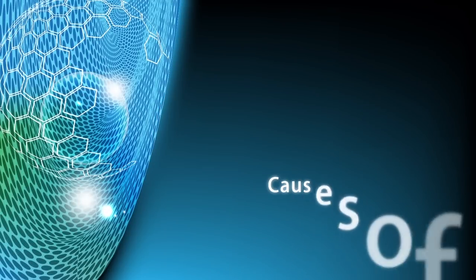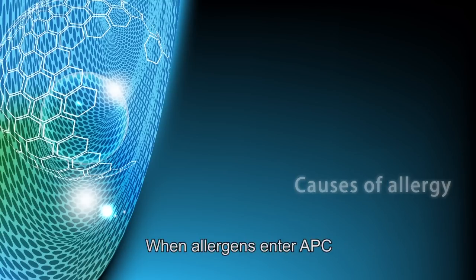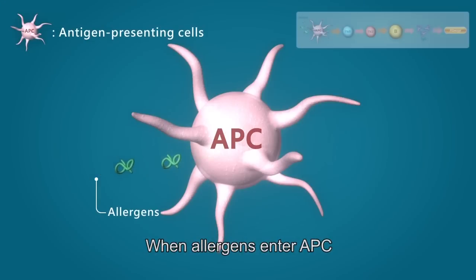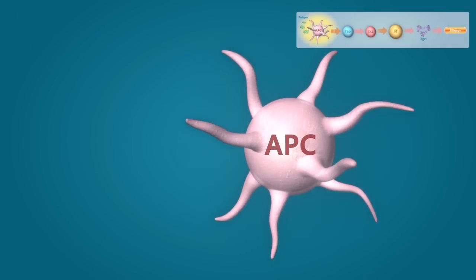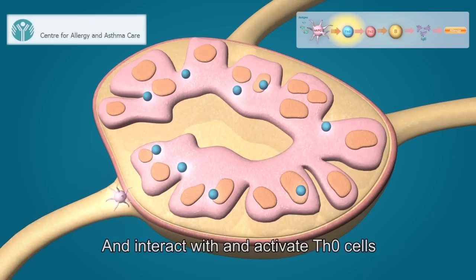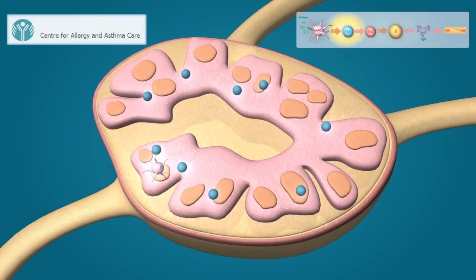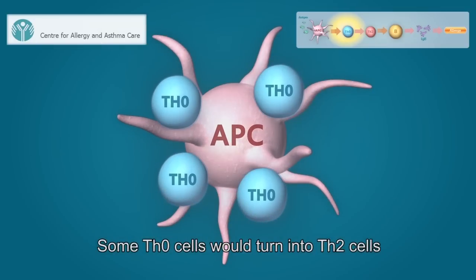Cause of allergy. In patients who have an allergic tendency, when allergens enter the APC, and the APC enters the lymphatic system, and interact and activate Th0 cells, some Th0 cells would turn into Th2 cells.